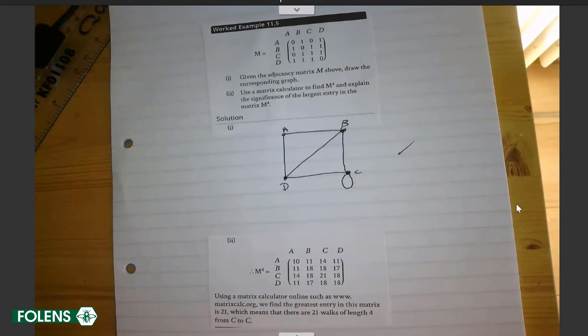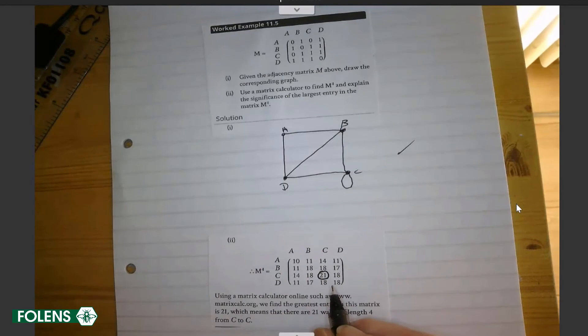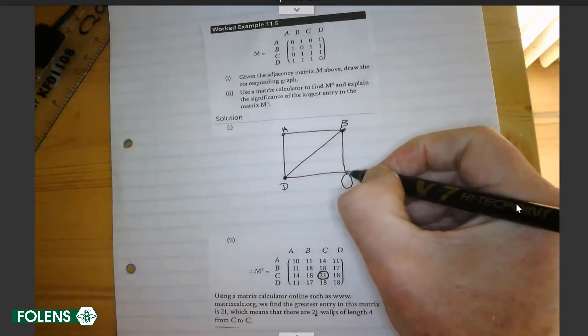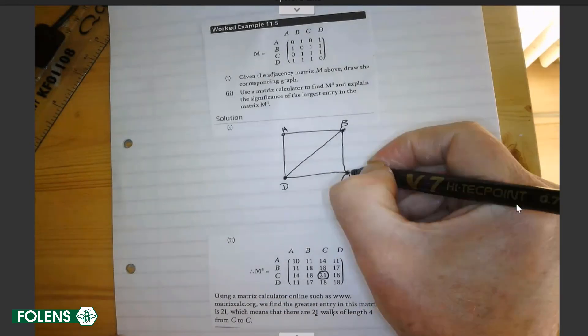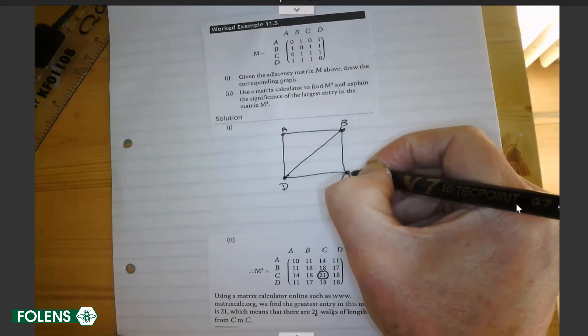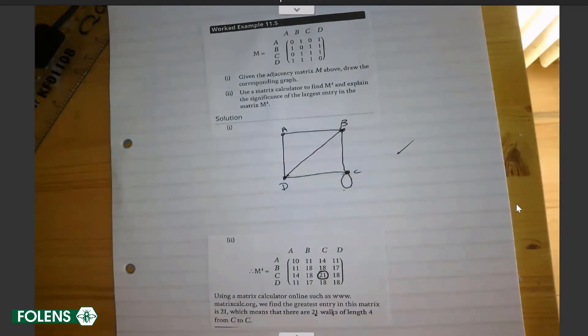And then the question says, explain the significance of the largest entry in the matrix. The highest entry here is 21. And that means, because it's M to the power of 4, that there are 21 walks of length 4 from C to C. And you can go from C to C in 21 different ways. I'll give you one example. From C to D to A to B to C, that's one, two, three, four. That's one. Here's another one. C to D to B to C to C. That's another one going from C to C. And as I said, the only unusual thing here is, is a loop one or is a loop two? We call it one.